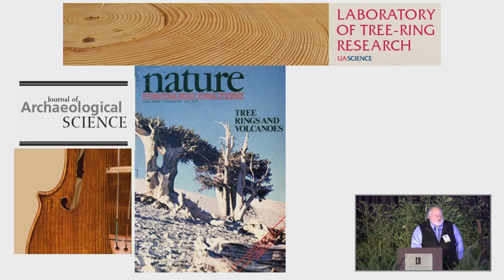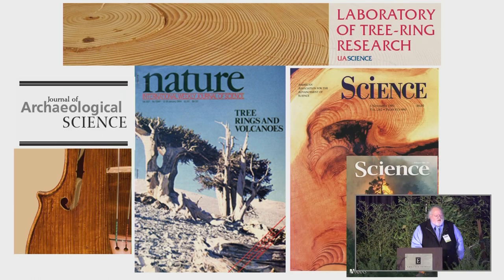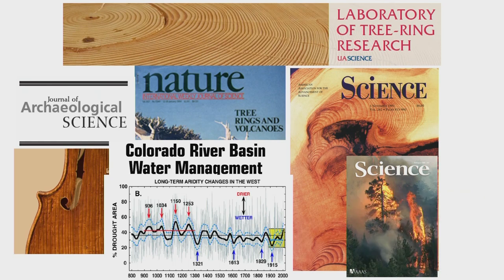Tree rings and volcanoes: big volcanic eruptions that put enough dust in the upper atmosphere to cool the planet cause freezing at tree line, leaving what we call a frost ring — a damage zone where cells actually froze. We've been able to date big volcanic eruptions going back thousands of years using tree rings. Climate history is probably the most useful application: using ring widths, we can calibrate and compare ring width patterns with gauged records of streamflow and rainfall to go back in time and compare current droughts with past flow periods.